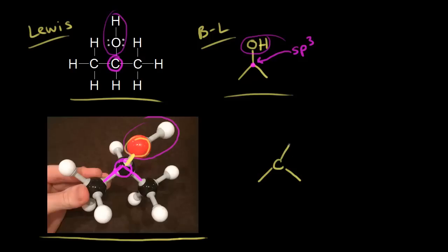We represent a bond coming toward you with a wedge. A wedge means that the bond is in front of your paper, so this means the OH is coming out at you in space. We also know there's a hydrogen connected to that carbon, even though we didn't draw it here.